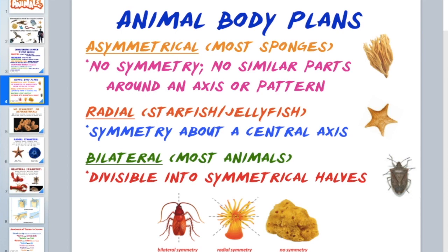Radial symmetry refers to symmetry around a center axis — like the center of a bicycle wheel with spokes showing that each section is similar to the others. Think of a pizza pie: each slice is similar to the other slices.